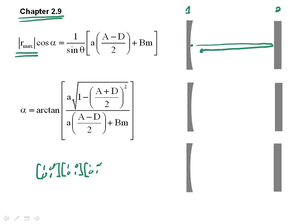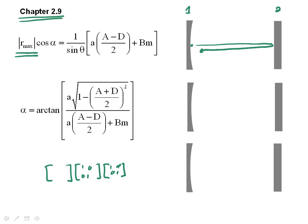It reflects, comes back through distance D — another [1, D; 0, 1] matrix. I've got my matrices in the wrong order, so let me redo this carefully. The last matrix written first is [1, D; 0, 1] for free space, then [1, 0; 0, 1] the identity matrix for the flat mirror, then [1, D; 0, 1] for the round trip back, and finally the reflection off the curved mirror: [1, 0; -2/R1, 1]. This gives me the full round-trip cavity matrix.